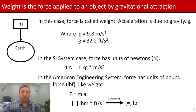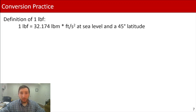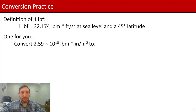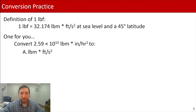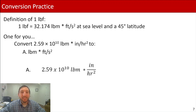Now I want to work through another practice problem using English units. As a reminder, one pound force equals 32.174 pound mass times foot per second squared — specifically at sea level and 45 degree latitude. We're going to convert 2.59 times 10 to the 10 pound mass times inches per hour squared into pound mass times foot per second squared in part a.